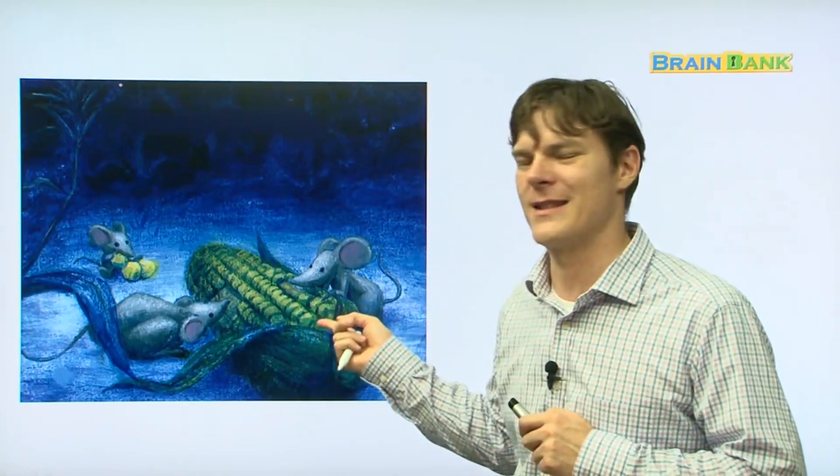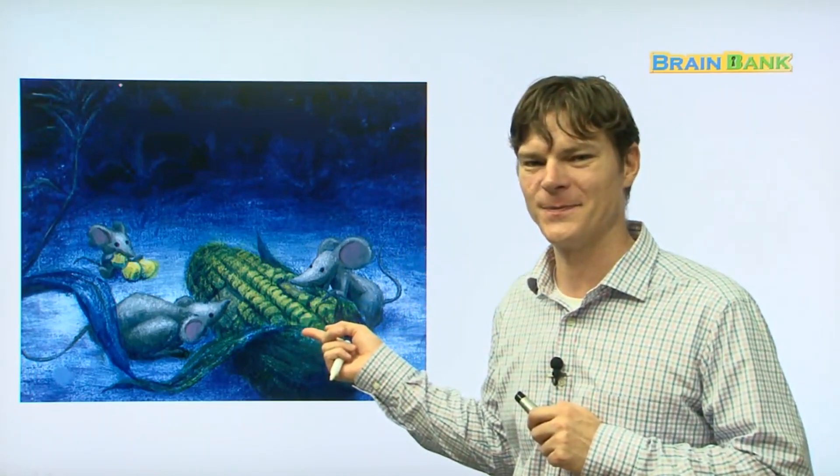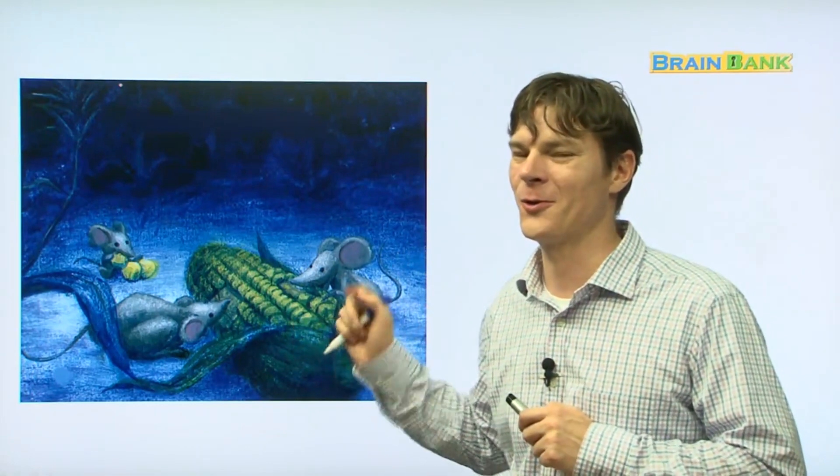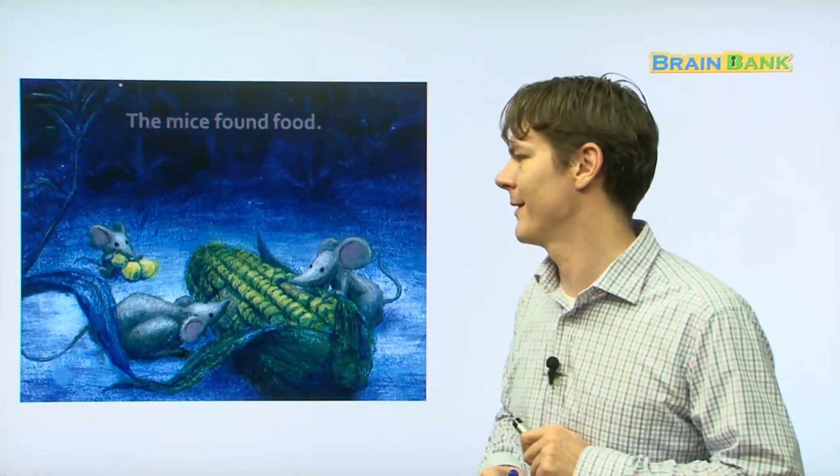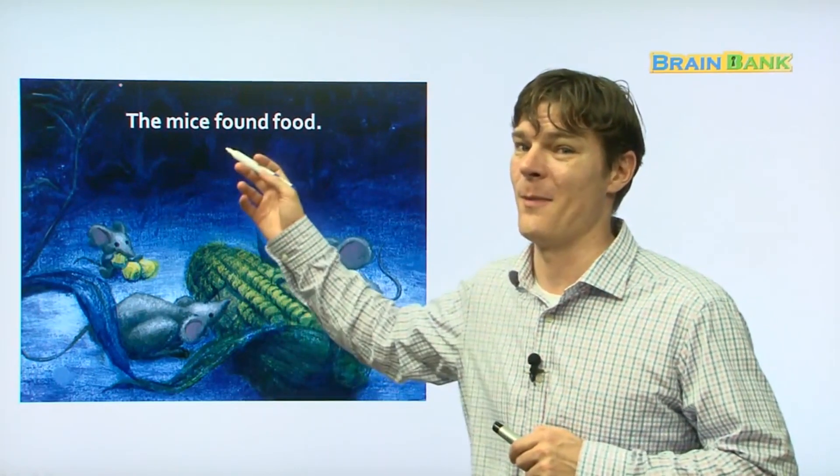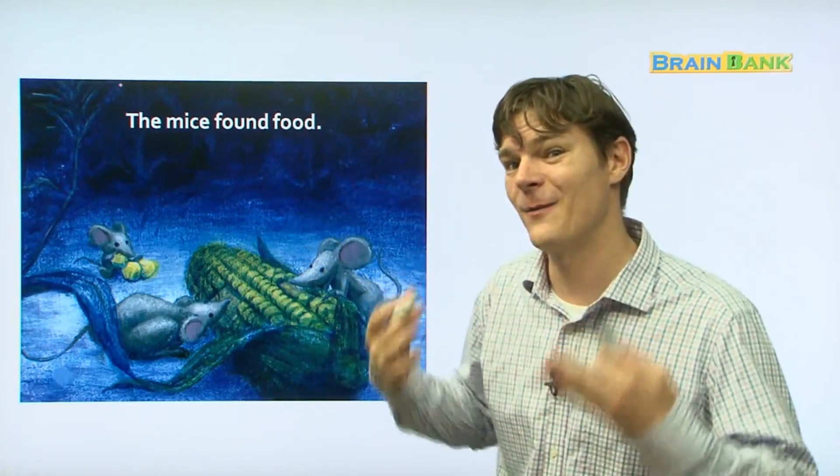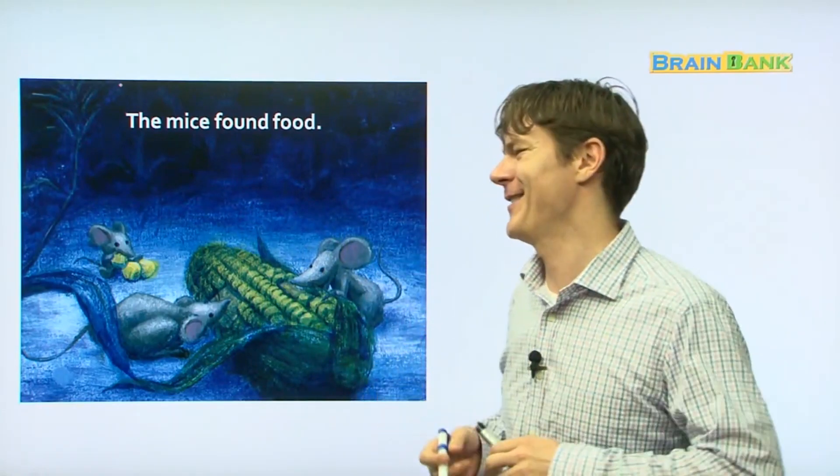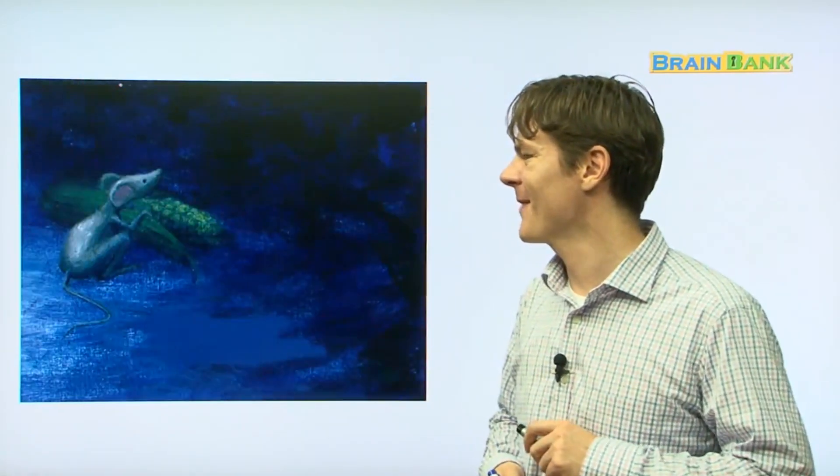What kind of food is this? Do you know in English? Corn. Sweet, delicious corn. I like some sweet corn. It's really good. The mice found food. Here they are. Do you think they're going to get away? Let's see.